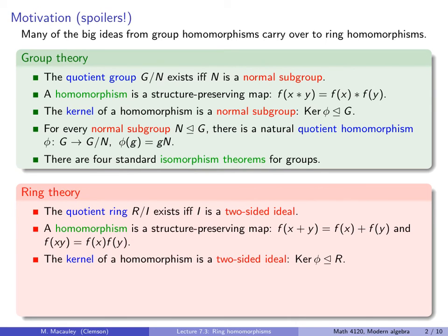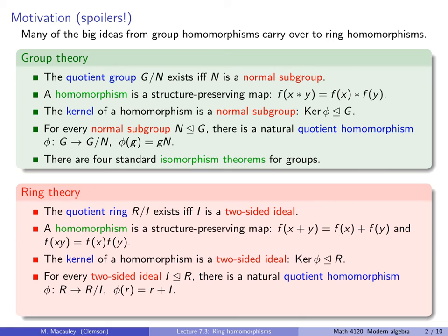The kernel of a homomorphism will always be a two-sided ideal. For every two-sided ideal, there will be a natural quotient homomorphism from R to R mod I that sends an element r to the coset r+I. And finally, there are four standard isomorphism theorems for rings, which are analogous to the ones for groups.